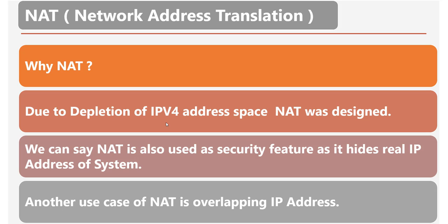Another use case is when we have an overlapping IP address situation. In that case also we can use NAT to change source and destination IP addresses. For example, if our source and destination IP addresses are in the same range or are the same, then to get that working we can translate our source IP address or our destination IP address. We will see the use case for that in our lab.